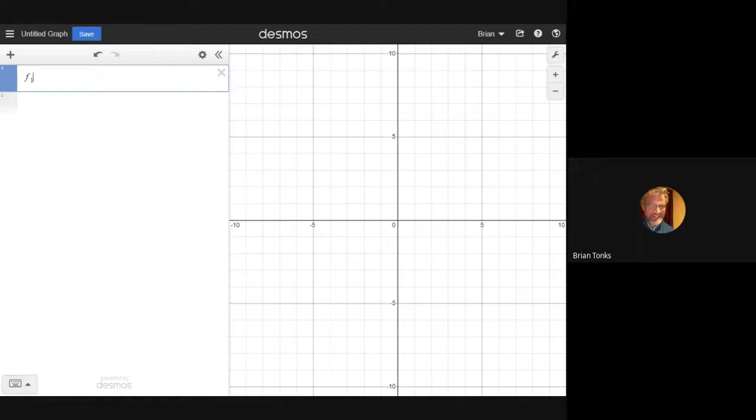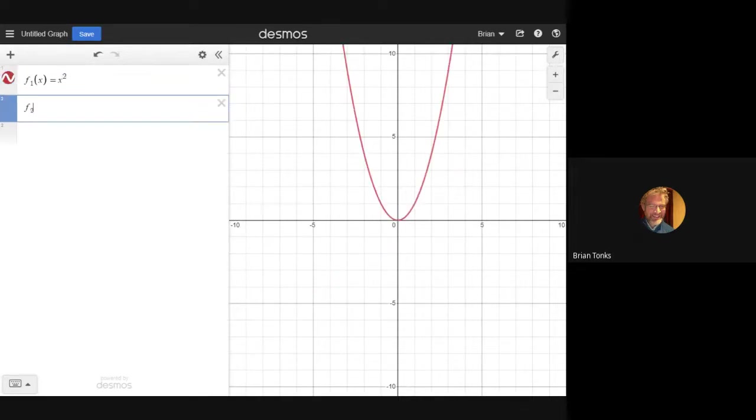Two functions we're going to try to join are F1, which we will make be a parabola, and F2. You can get the subscript of the one and two just by typing the number right after you type the letter. There they are.